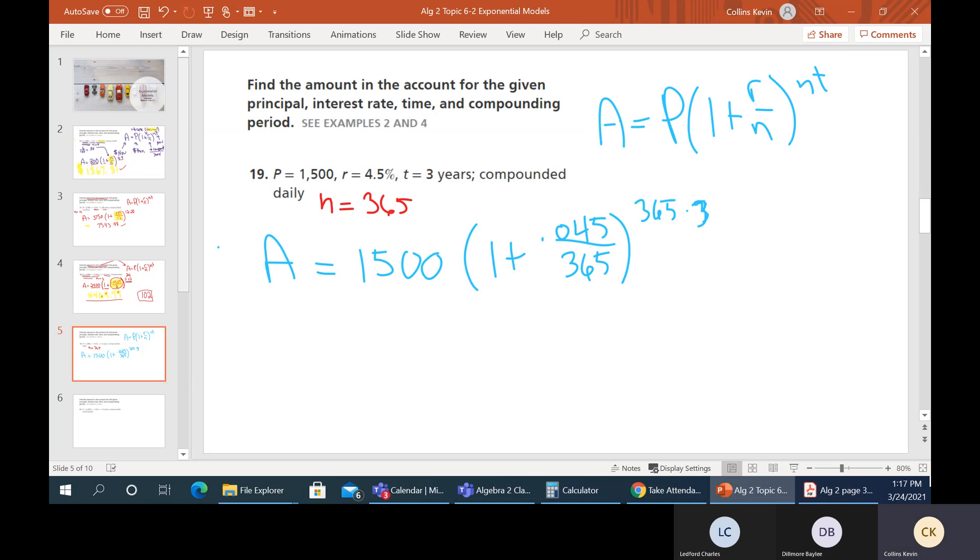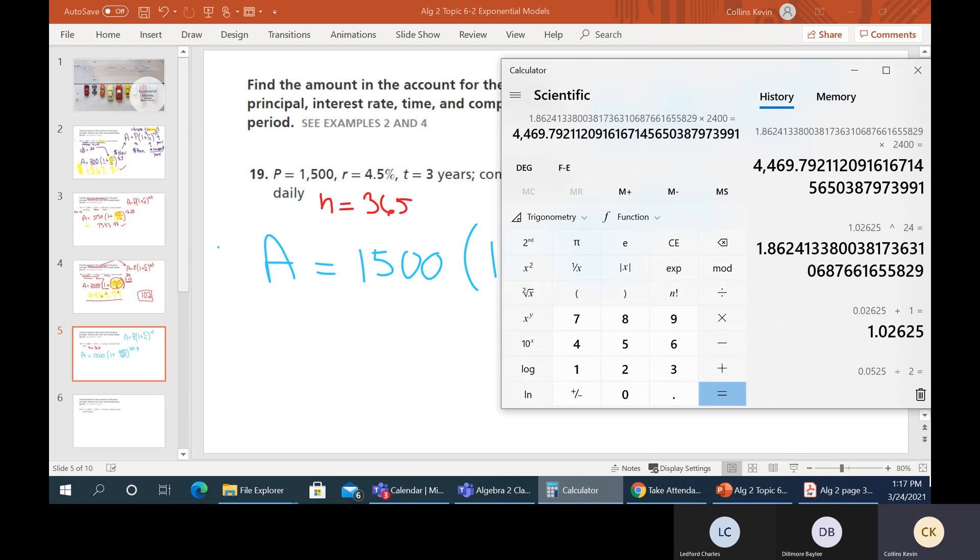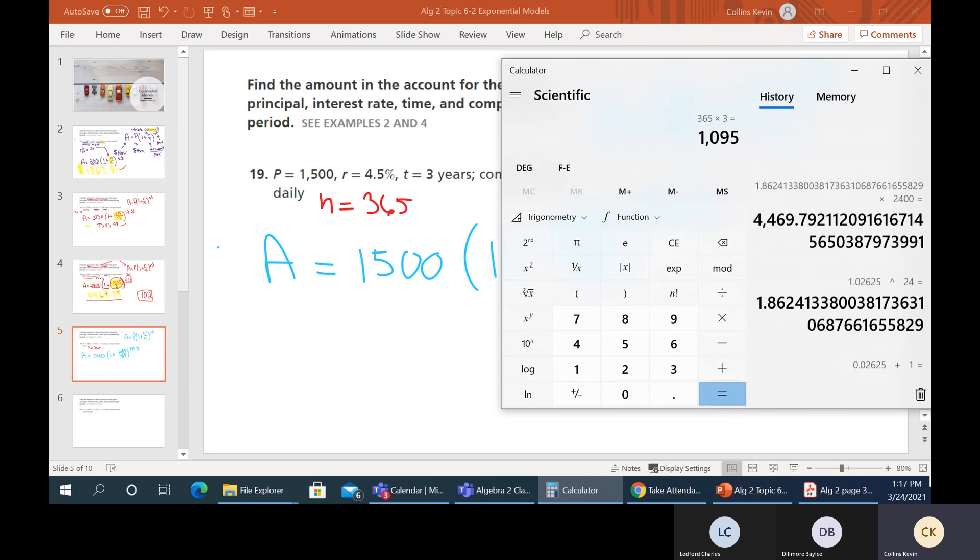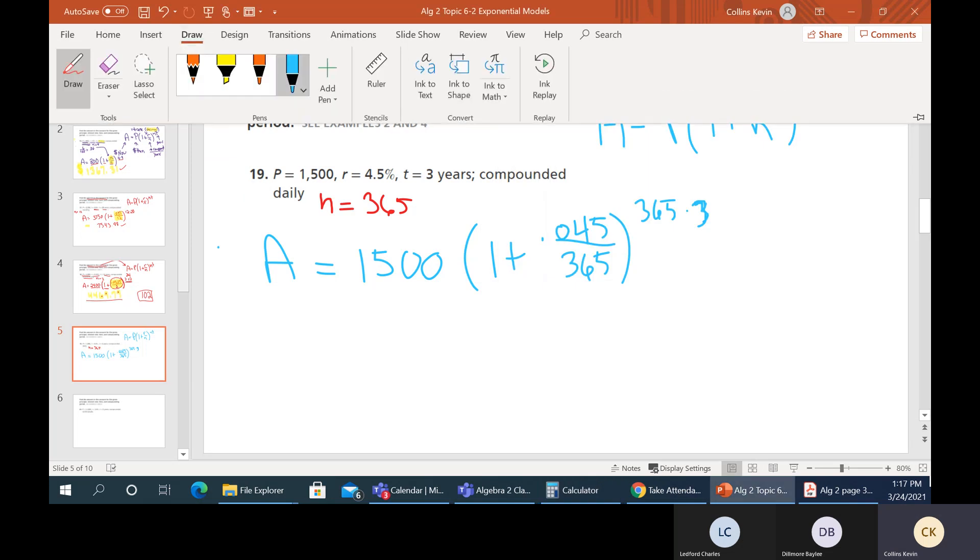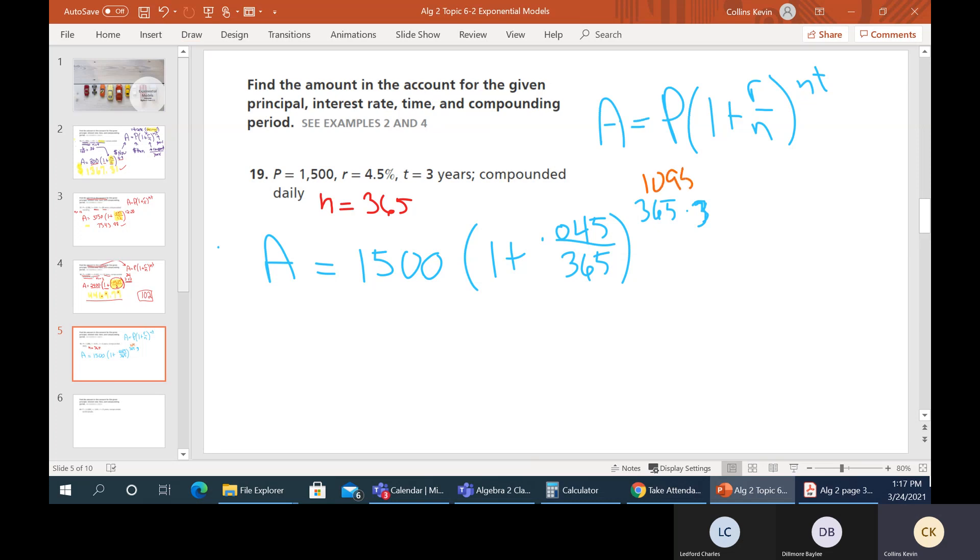So again, we've got A equals P. In parentheses, 1 plus R over N. Times N and T. Alright, so let's plug in our numbers. So A is going to be P is 1500. And we've got one plus. Our interest rate is 4.5%. Turn that into a decimal. It's going to be 0.045. N in this case is 365. So that means up here, this is going to be 365 times 3. This is where you're real glad you have a calculator. Because I don't know what that is. It's over 1000. I know that much, but that's about all I know. So let's figure out that part just to start off. So 365 times 3. 1095. So then this number here is going to be 1095. This ought to be a hoop.